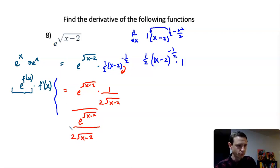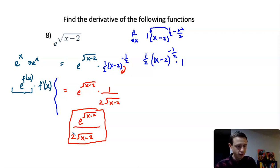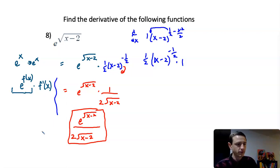There are a couple of equivalent forms this could come in — this is fine, or you can rewrite it with 1 over 2 square root of x minus 2 times e to the square root of x minus 2 in front. But the form with everything over 2 square root of x minus 2 would probably be the go-to answer you'd see in a textbook. And there it is — the derivative of e to the square root of x minus 2. A little bit of a process, a couple of chain rules, but pretty cool.